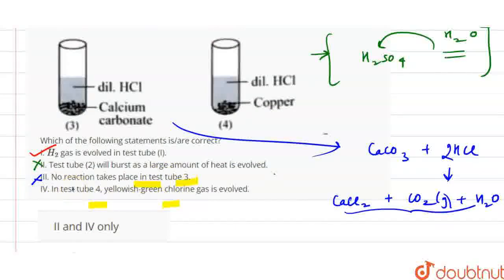In test tube number 4, dilute HCl reacts with copper. So you know that copper does not react with HCl. Because in the reactivity series, copper is present below hydrogen. So hydrogen will not be displaced.